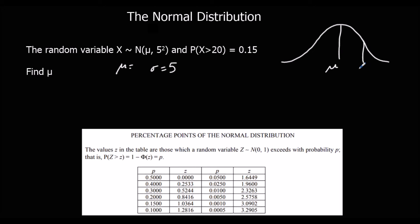So we can look up 0.15, probability of 0.15 gives us a z, a standardized score of 1.0364.